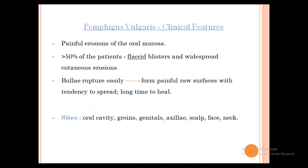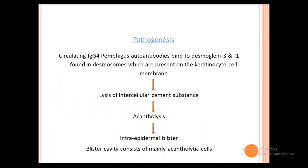Sometimes patients are referred from ENT because oral lesions are not healing. A bedside Tzanck smear is done, demonstrating acantholytic cells — a clue to Pemphigus Vulgaris. Pathogenesis: IgG4 Pemphigus autoantibodies bind to Desmoglein 3 and 1 on desmosomes present on the keratinocyte cell membrane. There is lysis of the intercellular cement structure, acantholysis, and intra-epidermal blister formation. The blister cavity consists mainly of acantholytic cells.